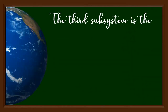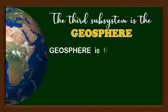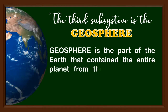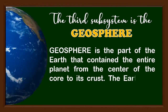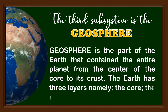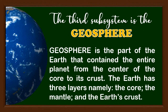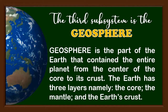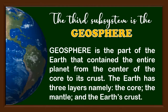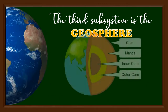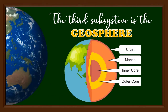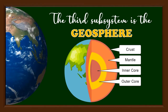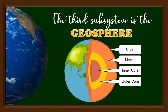The third subsystem is the geosphere. The geosphere is the part of the Earth that encompasses the entire planet, from the center of the core to its crust. The Earth has three layers, namely the core, the mantle, and the Earth's crust. The diagram shows the configuration of the different layers of the Earth, from the innermost — the inner core — to the outermost — the crust.